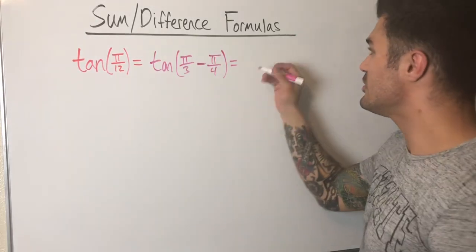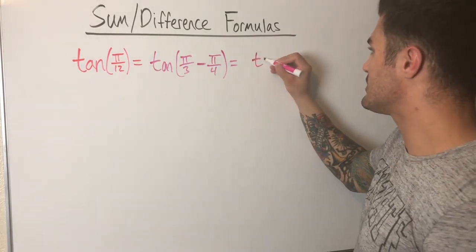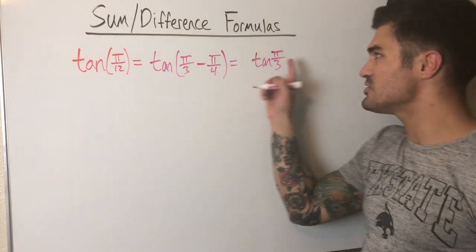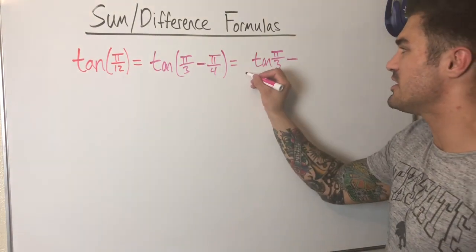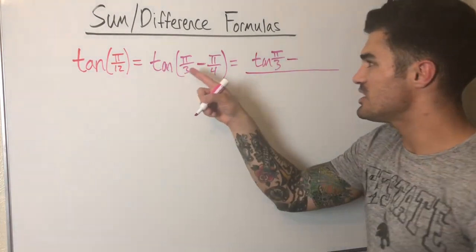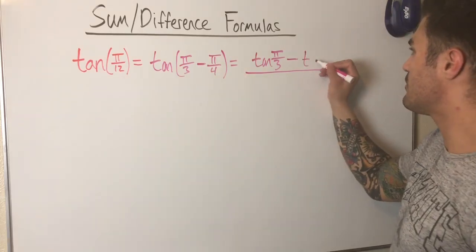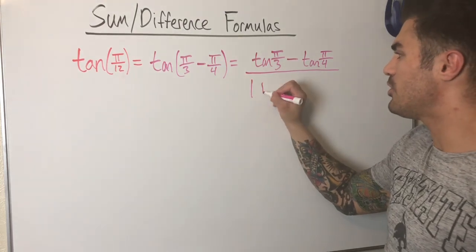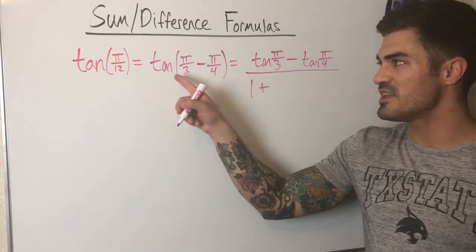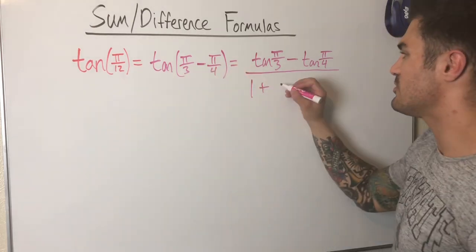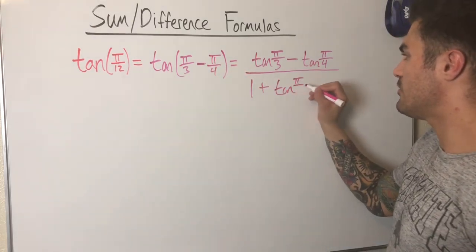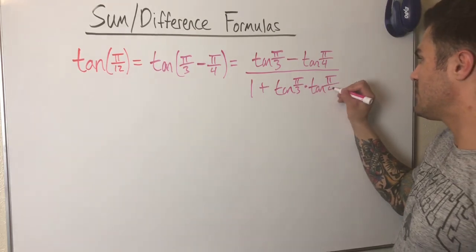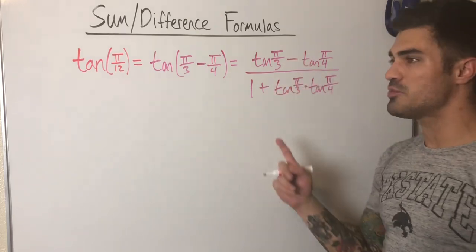Now I apply the tangent difference formula: tangent of (A − B) equals (tan A − tan B) over (1 + tan A · tan B). Since I have a minus in the argument, the numerator gets a minus and the denominator gets a plus — I do remember that about tangent. So I get (tan(π/3) − tan(π/4)) over (1 + tan(π/3) · tan(π/4)).